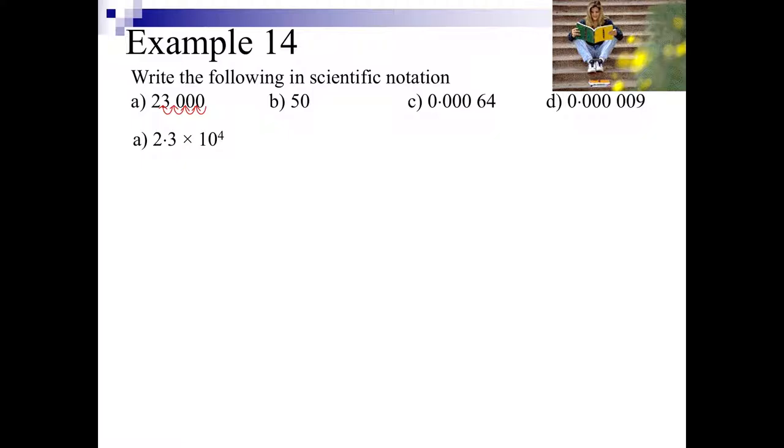Now let's have a look at question B. Question B, the decimal place would normally go after the 5, but when we write whole numbers we don't have to put a decimal place, so it just becomes 5. Now that has moved 1 space, giving us 5 times 10 to the power of 1, but because it's to the power of 1, we just write times by 10. So 50 is equal to 5 times 10.